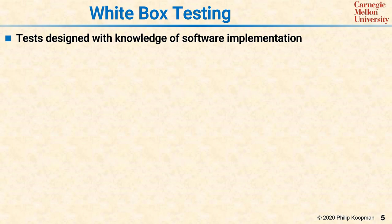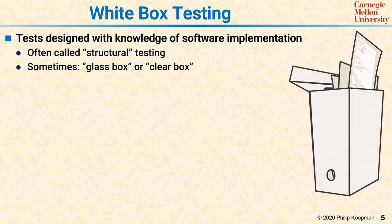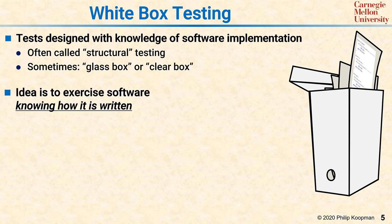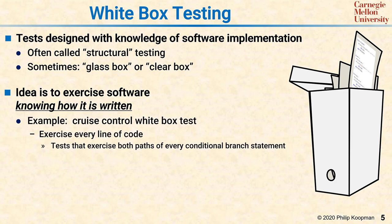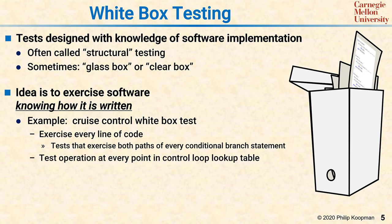The other general approach to testing is white box testing. In white box testing, the designer has knowledge of how the software is actually written — you're actually looking at the code when you design the tests. White box testing is often called structural testing, or sometimes glass box or clear box testing, but white box testing is the preferred term. The idea is to exercise software knowing how it is written. Back to the cruise control example, a white box test would look at all the lines of code and make sure all the paths are exercised, and if there's a lookup table, make sure every entry has been tested, knowing exactly where the boundaries are.